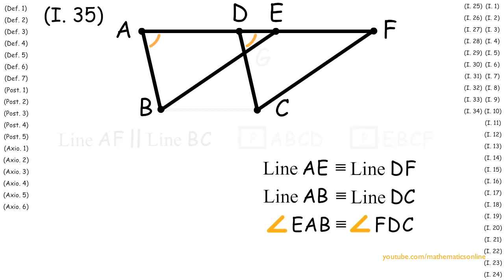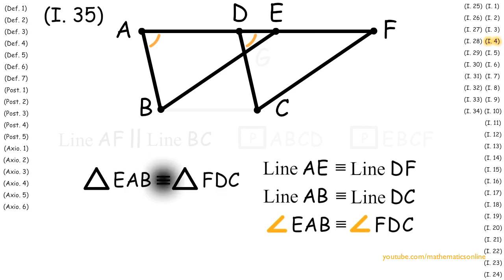Now since triangle EAB and triangle FDC share a corresponding side, angle, and side, then by Proposition 4, triangle EAB is congruent to triangle FDC.